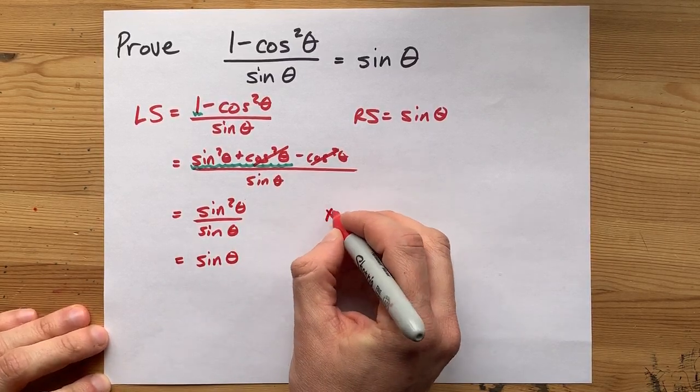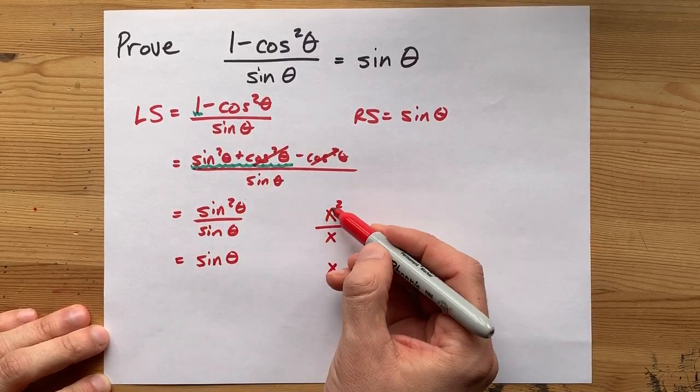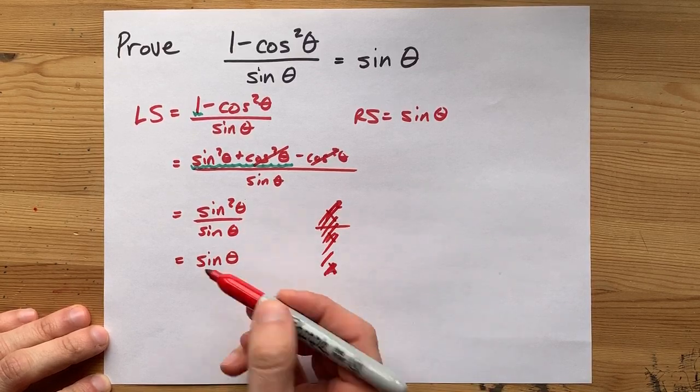I know you know that x squared divided by x leaves you with a single x. That's exactly what's happening here. Except with sines.